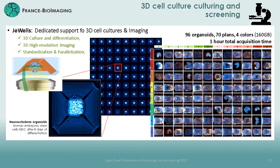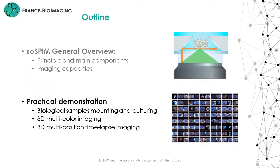We demonstrated our capacity to automatically record 96 neuro-organoids in four colors over a range of 60 microns in less than one hour using a single SOSPIN device. The SOSPIN technology can therefore be easily turned into a fully integrated high-throughput imaging platform that combines high-density and standardized organoid culture with parallel light sheet-based 3D fluorescence imaging. During the practical demonstrations, I will come back to this imaging capacity and illustrate how we can design an experiment to monitor in parallel the growth of tens of 3D cell cultures over time.